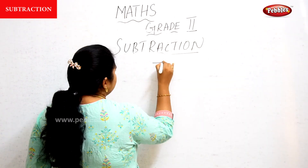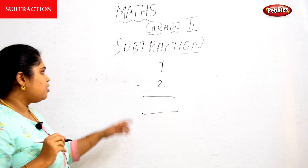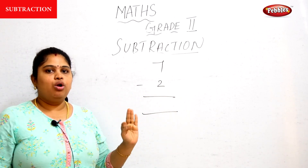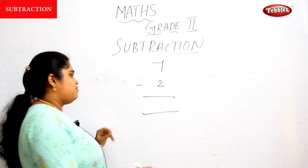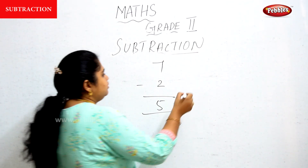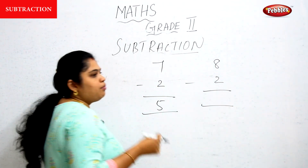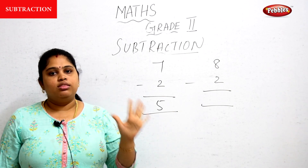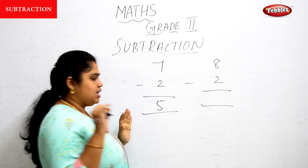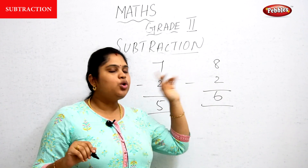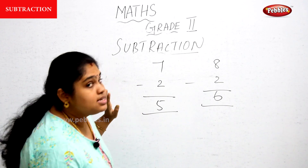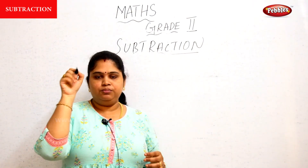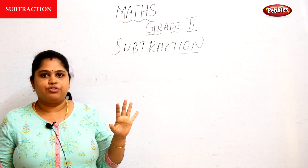Let's do a few more sums. Seven minus two: from seven, backward counting — six, five, four, three, two. How many fingers raised? Five fingers, so five is the answer. Next: eight minus two. From eight: seven, six, five, four, three, two — six fingers raised, so six is the answer. Why did I stop at two? Because two is the number given. This is how a mature student performs subtraction using backward counting.